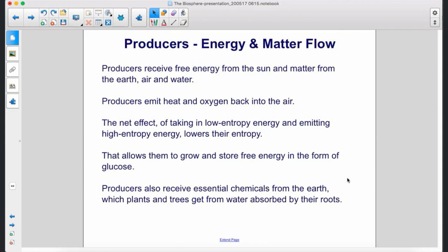Producers emit heat and oxygen back into the air. The net effect of taking in low-entropy energy and emitting high-entropy energy lowers their entropy. That allows them to grow and store free energy in the form of glucose.